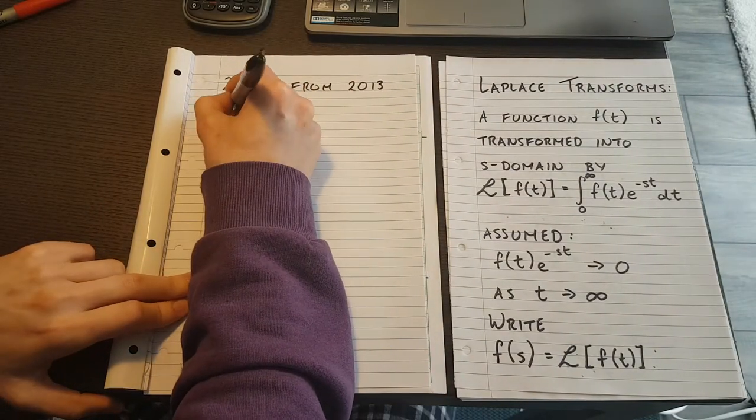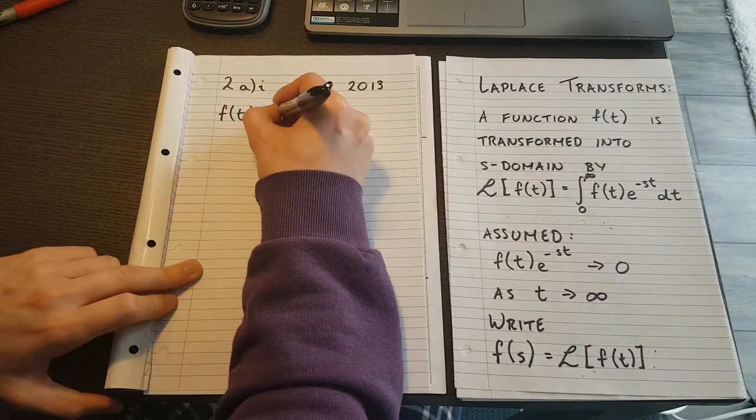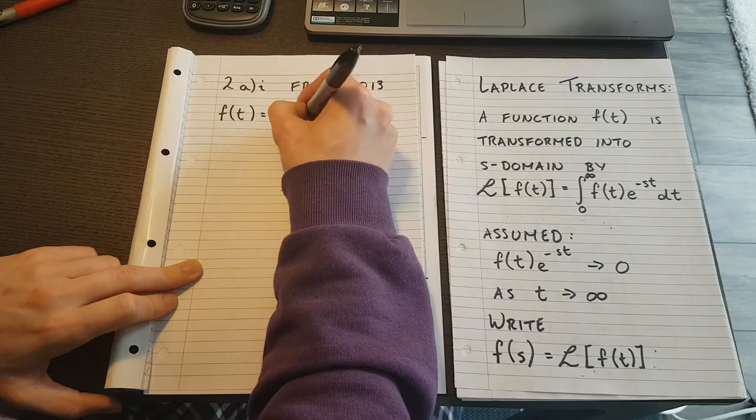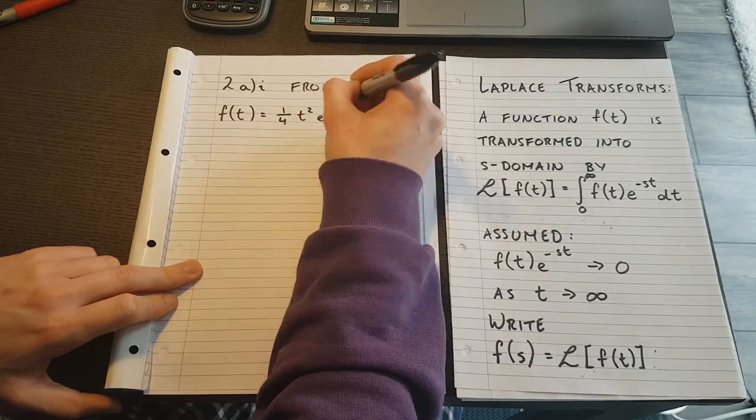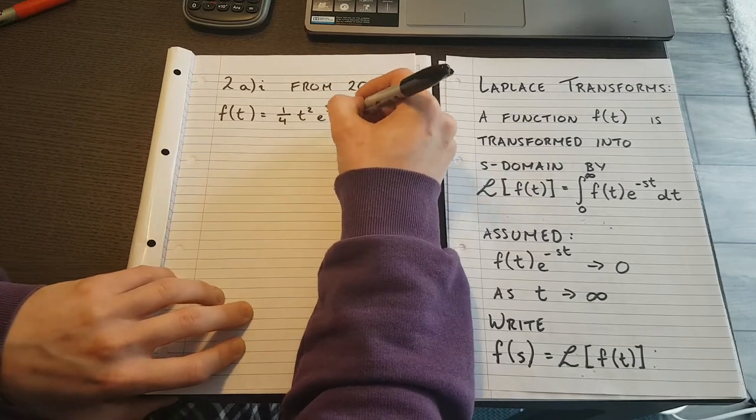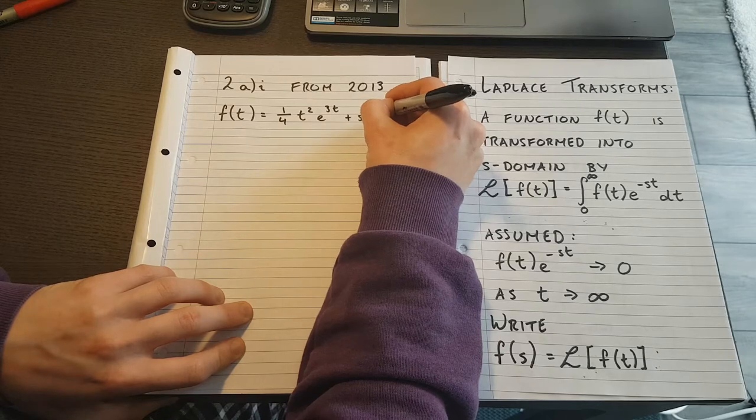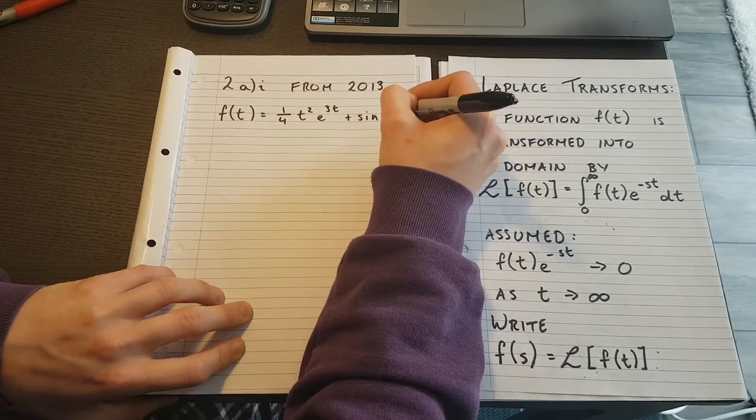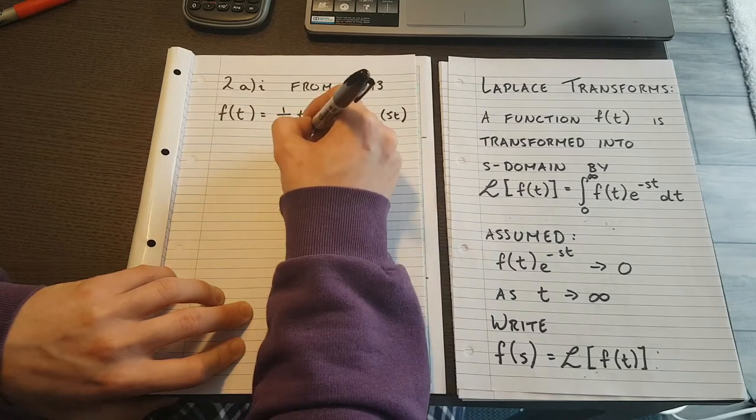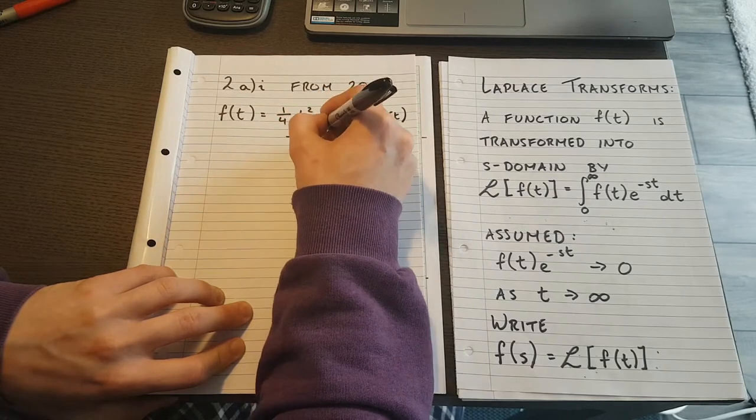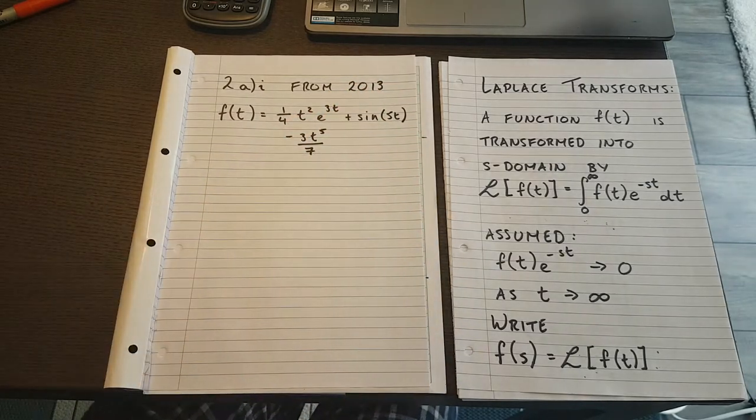We're told that f(t) is equal to 1/4 t² e^(3t) sin(5t) minus 3t^5/7.